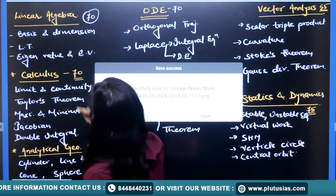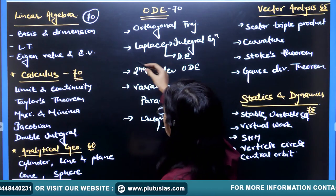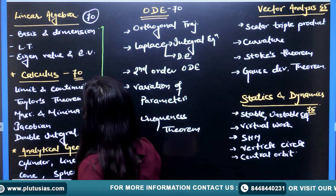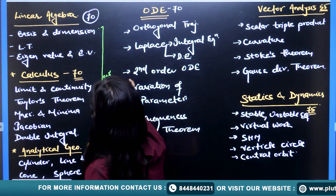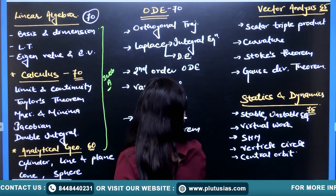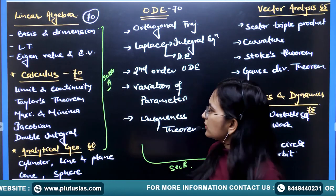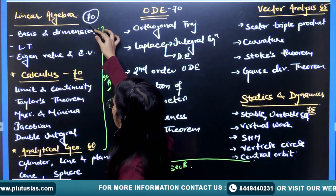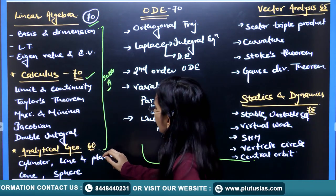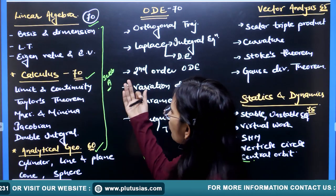In Paper 1 we have 6 units. Linear algebra, calculus, and analytical geometry form Section A, while the remaining units are under Section B. Linear algebra consisted of 70 marks, calculus again 70 marks, and analytical geometry was 60 marks. Let's see which topics were covered.